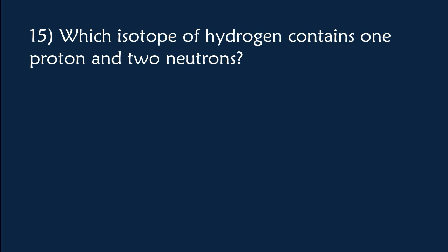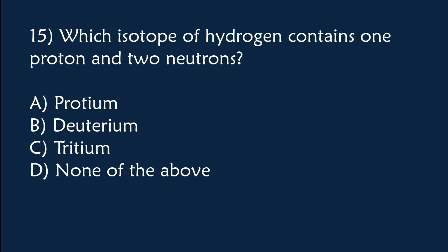Which isotope of hydrogen contains one proton and two neutrons? A) Protium, B) Deuterium, C) Tritium, D) None of the above. The correct answer is Option C, tritium.